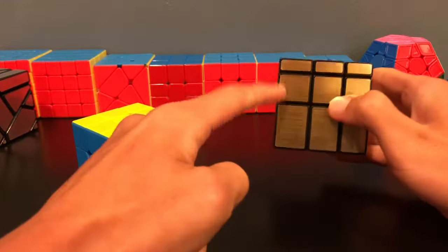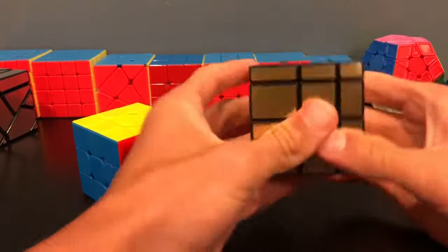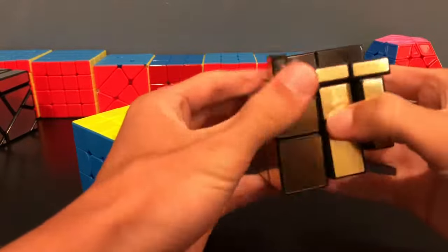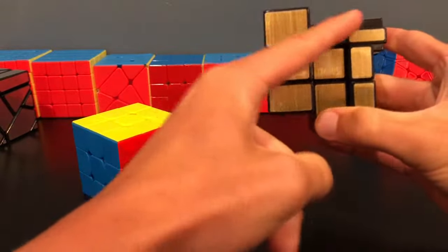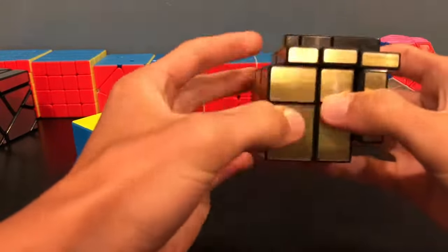As you can see here, each side is still three pieces by three pieces, and even as we sort of mix up the cube, it's still going to be three pieces by three pieces.